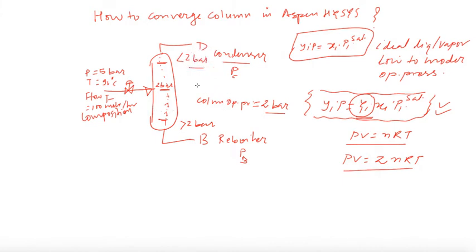To balance the column and make it converge, how much we need to do? A rough estimate initially: we can put here 1.8 bar and here we can put 2.2 bar. You need to check this pressure, keep on adjusting these two pressures, and you will see that your column will converge.